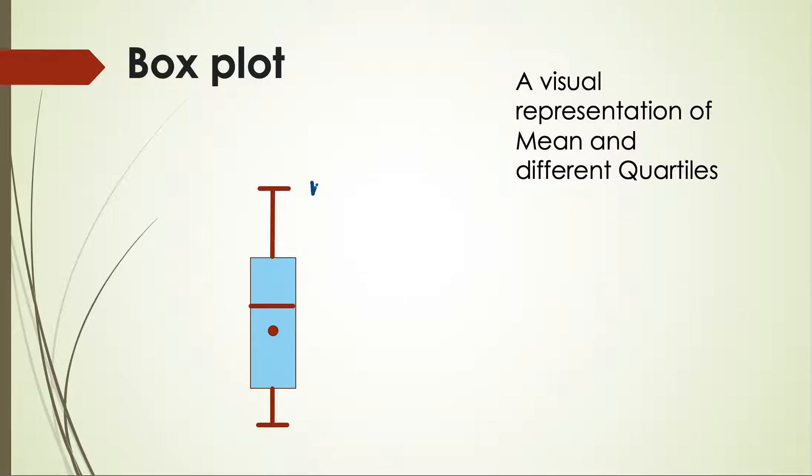In this diagram, this represents the maximum in the data, also called the fourth quartile, and this is the minimum, the zeroth quartile, as we had seen in the earlier video. The scale is this way, increasing. So if this is a value, let's say 10 here, then this will be a value greater than 10, maybe 100.